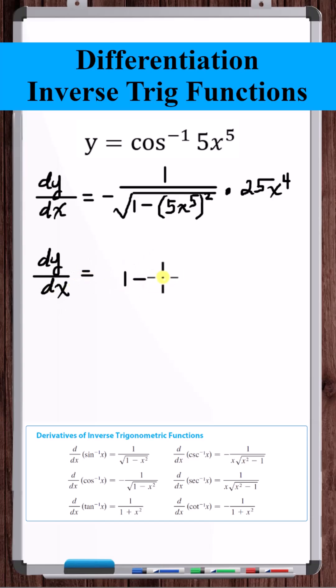5x to the fifth squared is x. And that's the derivative.